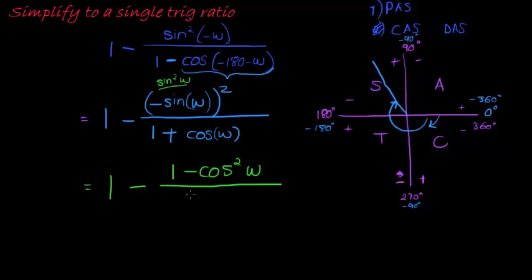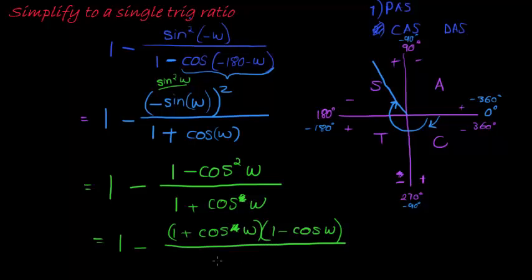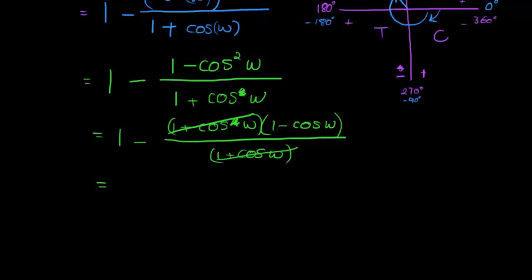So I'm changing that into 1 minus cos w and this one into 1 plus cos squared w. And you notice why I did that, because this can factorize into two brackets. So I can get 1 plus cos w, and 1 minus cos w over 1 plus cos w. And you see why I did that, because now everything in the denominator can cancel with one of the factors in the numerator. To give me that over here, I only have a 1 left in the denominator.